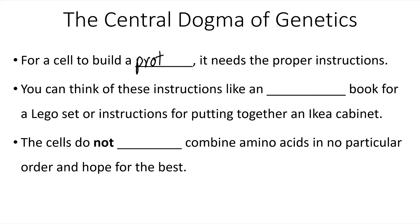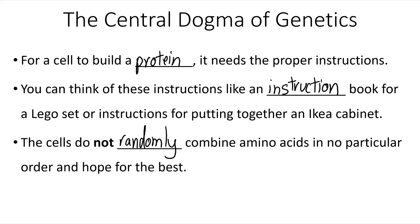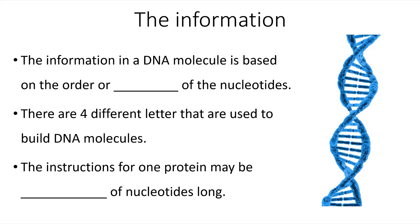For a cell to build a protein it needs the proper instructions. You can think of these instructions like an instruction book for a LEGO set or instructions for putting together an IKEA cabinet. The instructions don't become a part of the final structure, but those instructions are needed to put the pieces together. Cells do not randomly combine amino acids in no particular order and simply hope for the best. Protein assembly is always guided based on instructions from nucleic acids.